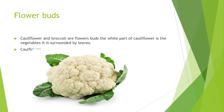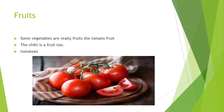Flower buds include cauliflower and broccoli. The white part of the cauliflower is a vegetable. This is a flower bud — the shape and structure look like a flower, and it is very beautiful.